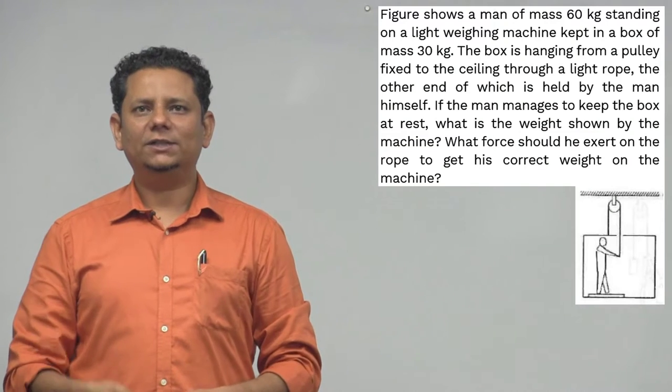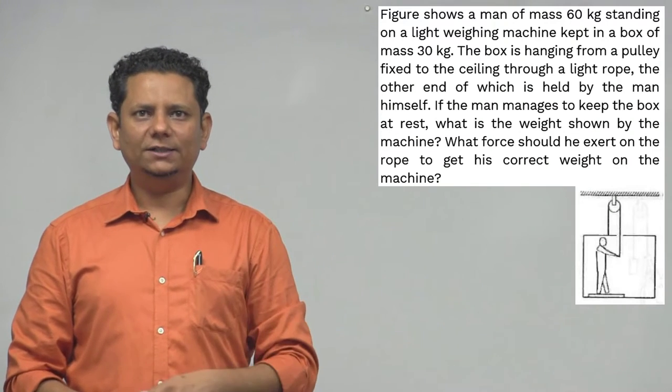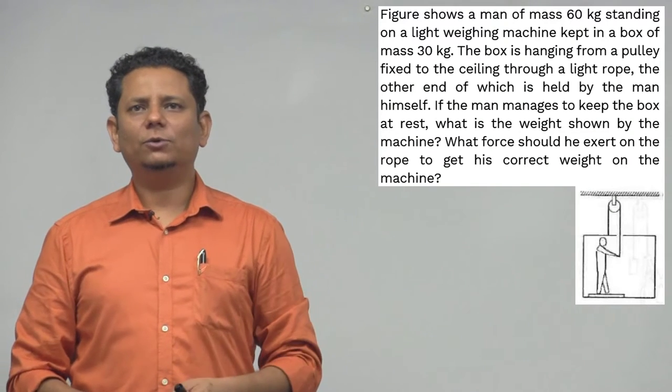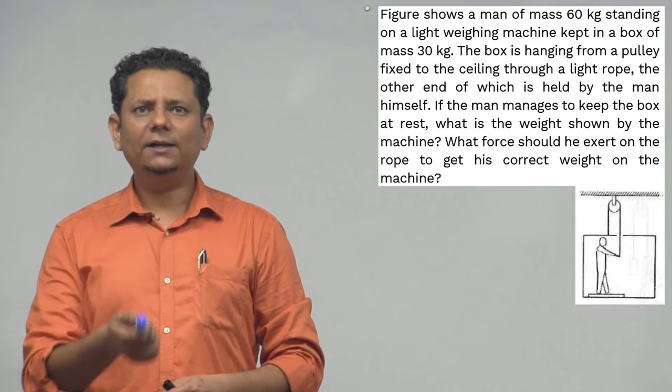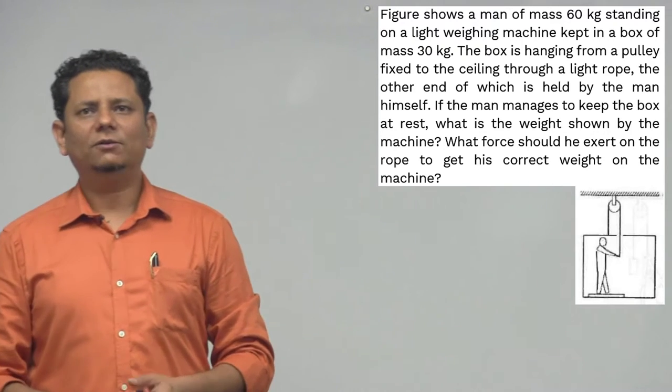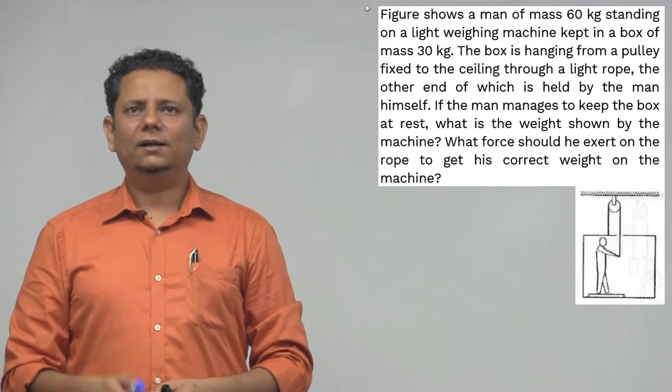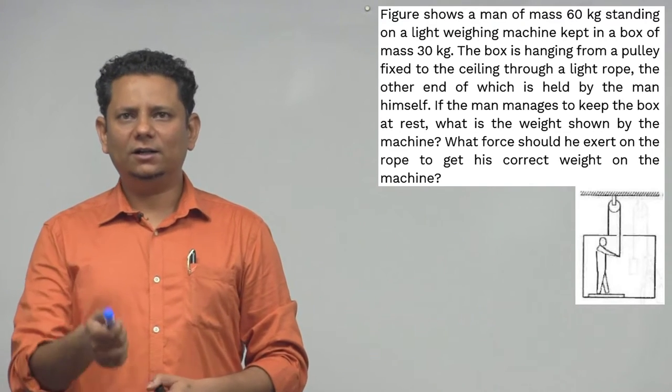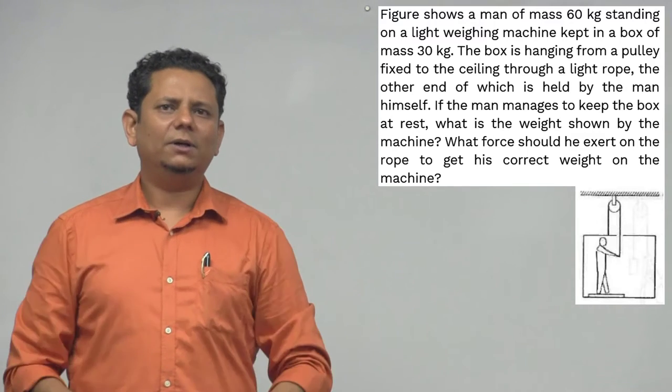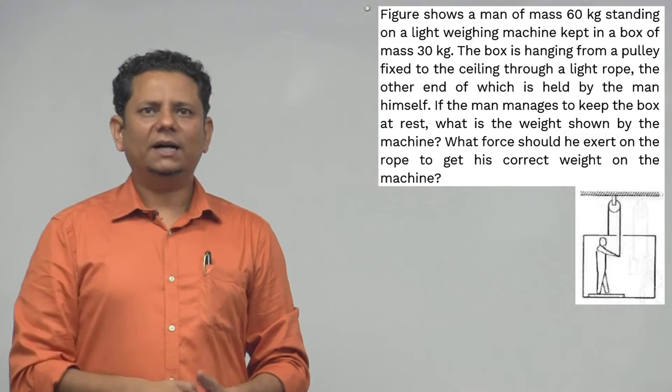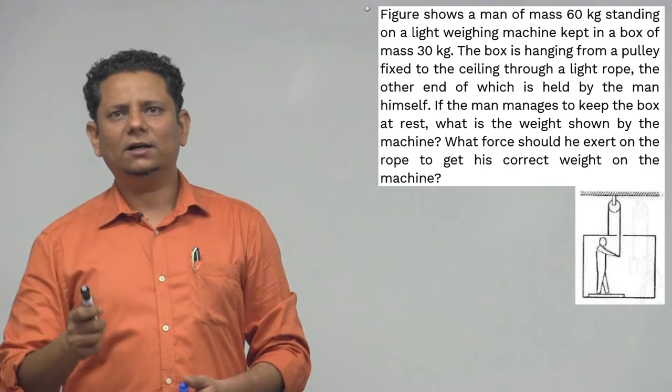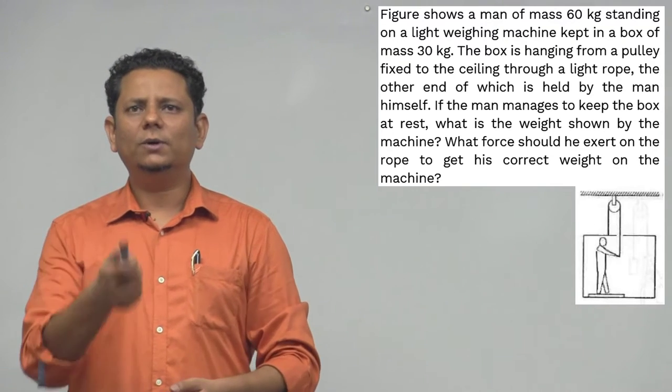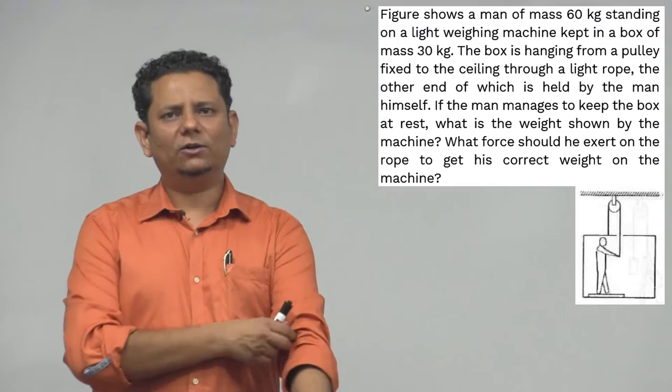The question says: Figure shows a man of mass 60 kg standing on a light weighing machine kept in a box of mass 30 kg. The box is hanging from a pulley fixed to the ceiling through a light rope, the other end of which is held by the man himself. If the man manages to keep the box at rest, what is the weight shown by the machine? The second part asks: what force should he exert on the rope to get his correct weight on the machine?